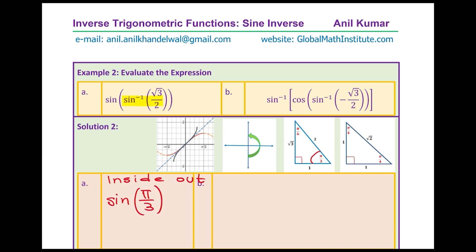Sine of pi by 3 returns the exact value from where we started: root 3 over 2. We are doing sine and sine inverse, so we get the same value, provided we are in the right domain. As you know, f of f inverse of x is basically equal to x — and that is what we got in part A.